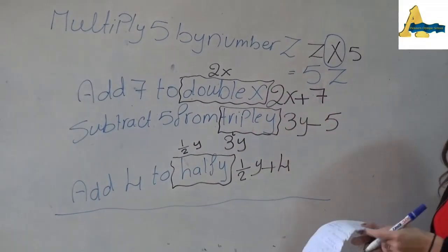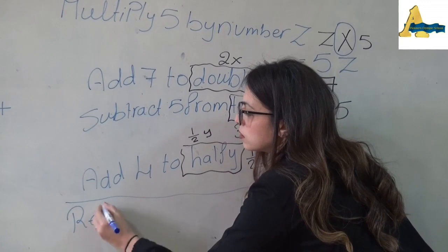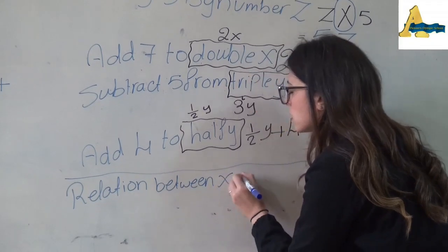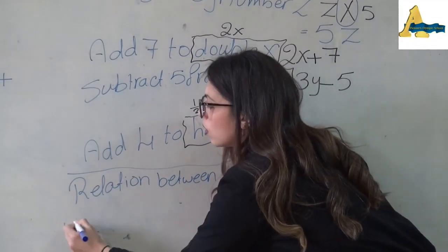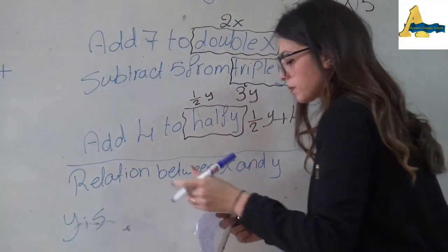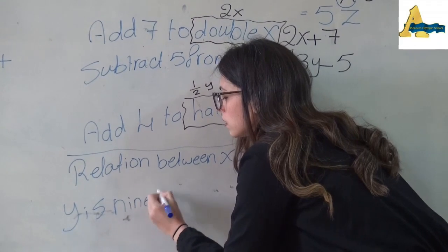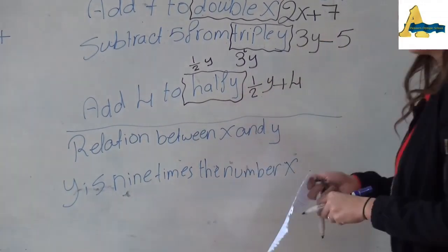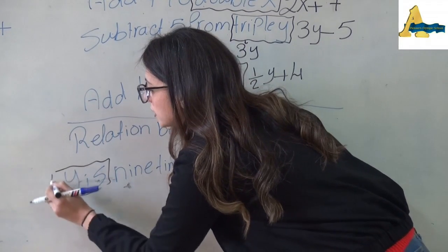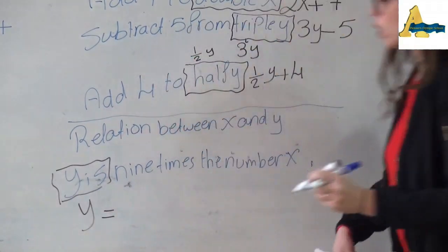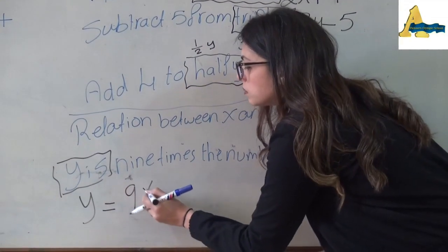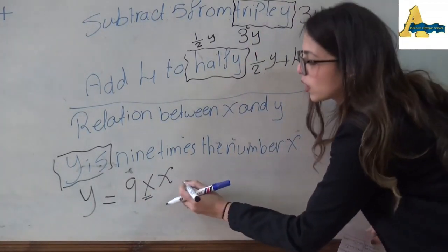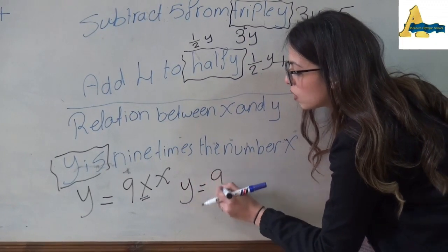Second, we are going to have the relation between x and y. If he said 'y is 9 times the number x': the word 'y is' means y equals. Y equals 9 times x. But we said the times sign can be hidden, so I can write it as y = 9x.